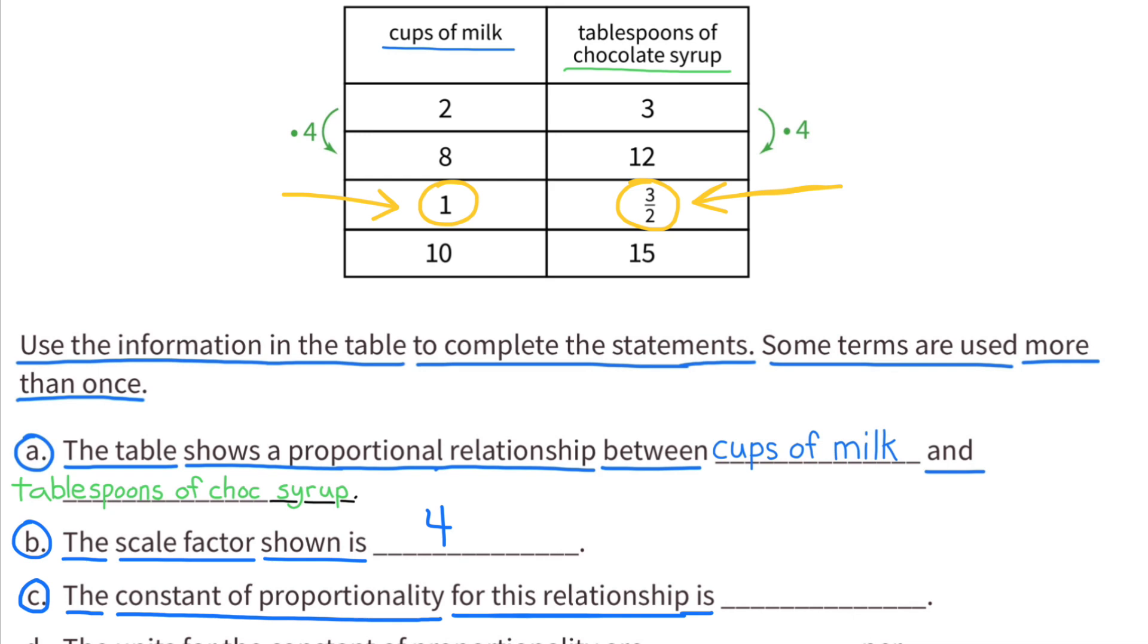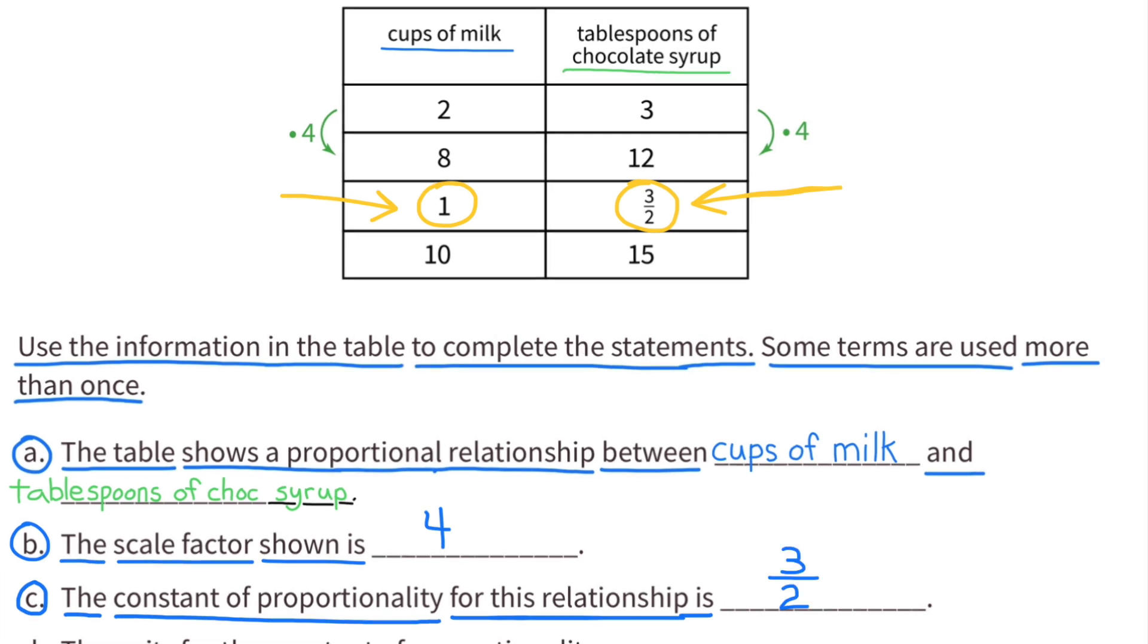The constant of proportionality for this relationship is 3 halves, or 1 and a half, because for every 1 cup of milk, there's 3 halves, or 1 and a half, tablespoons of chocolate syrup.